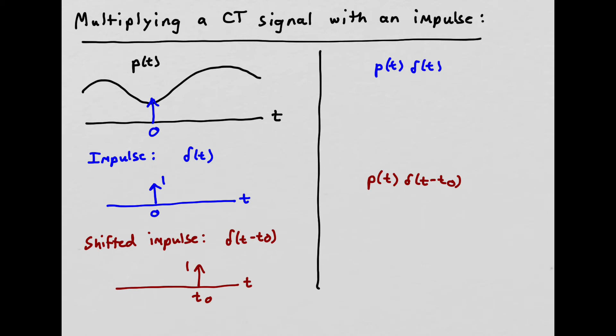Well, we see that when we multiply these together, we're going to get nothing for T less than 0, and nothing for T greater than 0. All we can get is an impulse. But now the impulse is going to be scaled by whatever P of T is equal to at 0. So what we're going to get back is P of 0 delta of T. So we get back an impulse at 0 with an area of P of 0. So that's what we get back when we multiply P of T by delta of T.